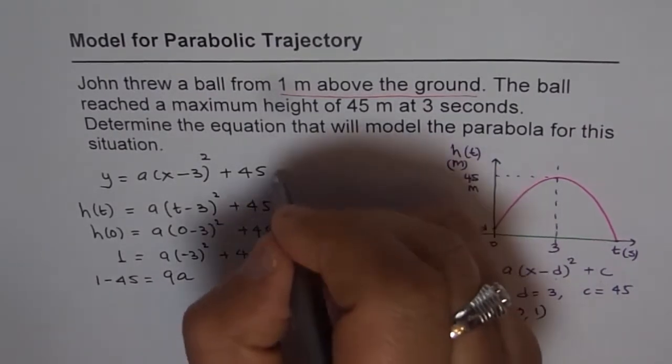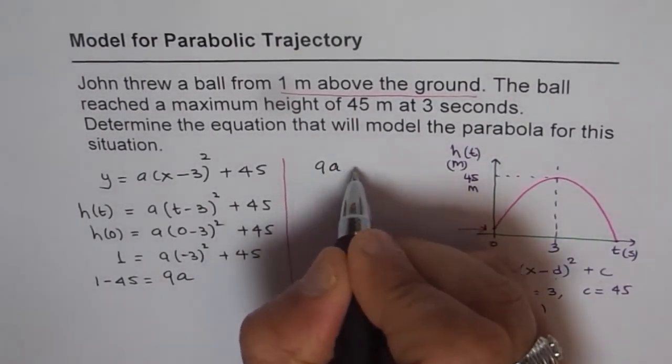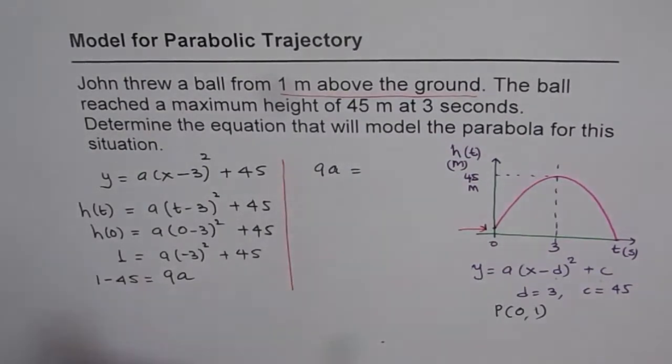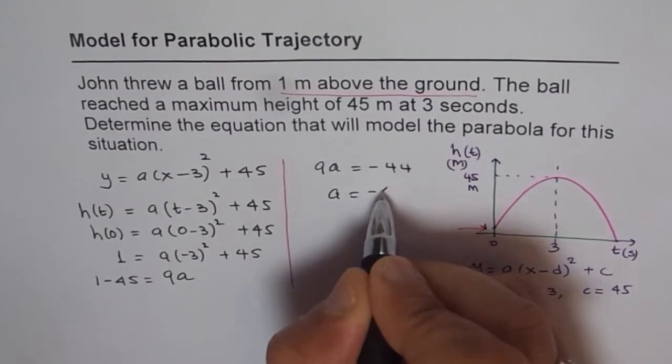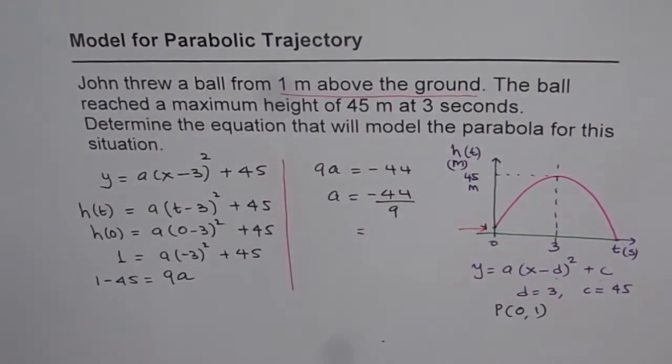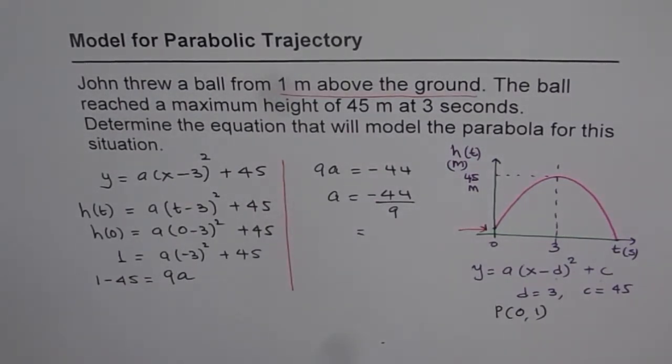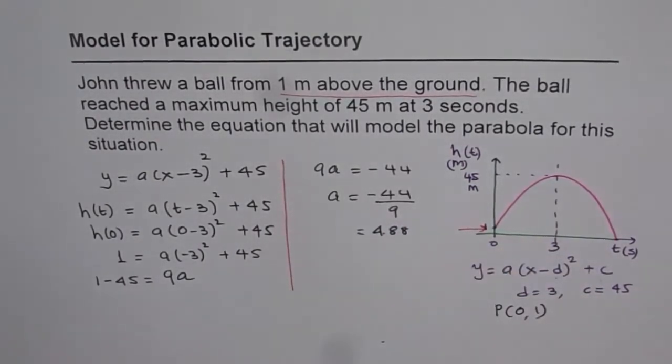So let's do this here. So we have 9a equals 1 minus 45. That is minus 44 or a equals minus 44 divided by 9. Which is we can use the calculator. Which is divided by 9 equals let me change it to 4.88. So it says 4.88 like this with the minus sign. So that is a.